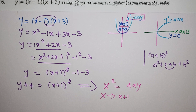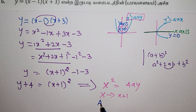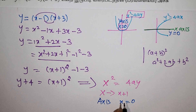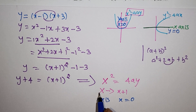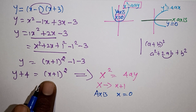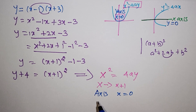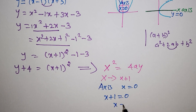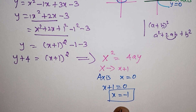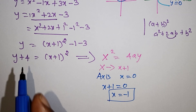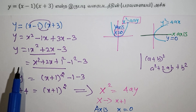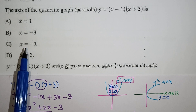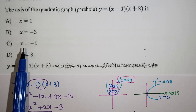X is equal to 0 gives the axis. So axis is equal to 0. Capital X is equal to 0 means x plus 1 equals 0, so x is equal to minus 1. X equals minus 1 is the axis. The correct answer is x equals minus 1 — that is the third option.